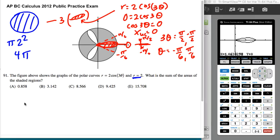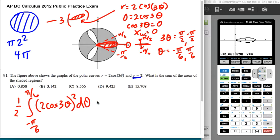So if I want to find the area of that one petal, I'll do one half the integral from negative pi over 6 to pi over 6 of 2 cosine of 3 theta quantity squared with respect to theta. And I can do that in my calculator right now.